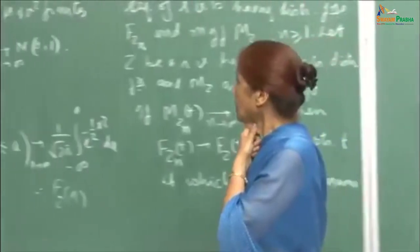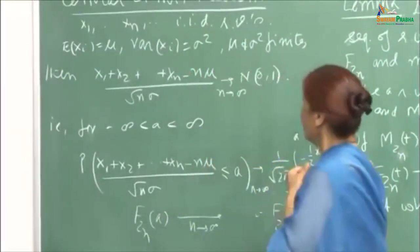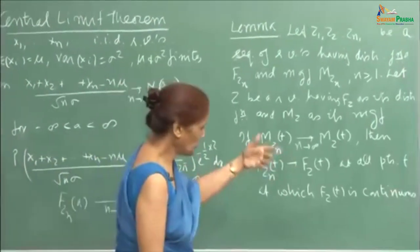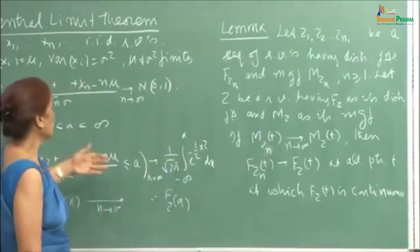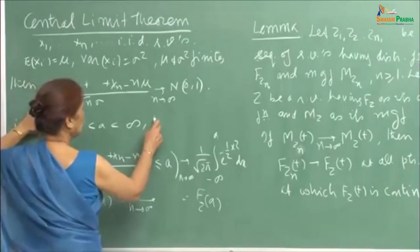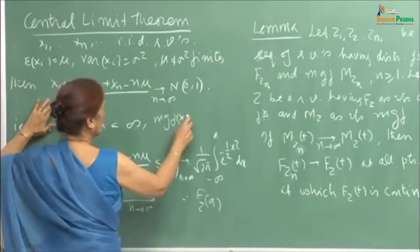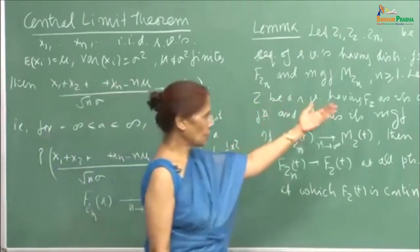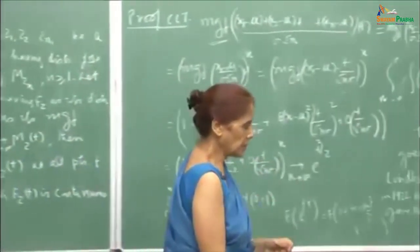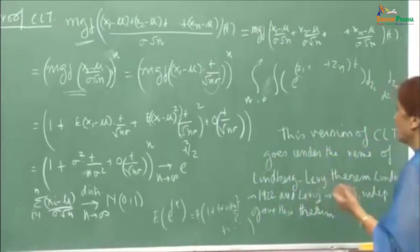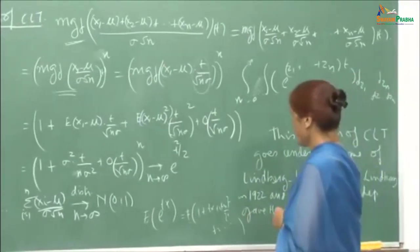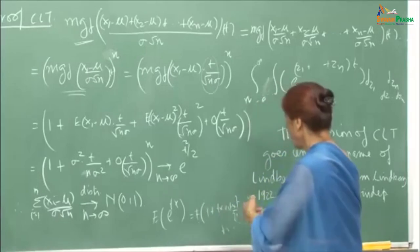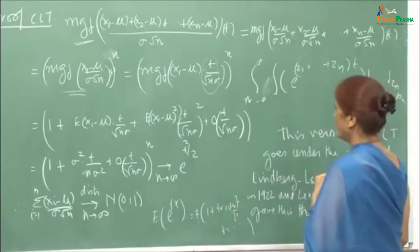In the central limit theorem, we assumed finite variance. An additional assumption is that the MGF of xᵢ exists, so we will consider those t's at which the MGF is defined. Since the MGF exists, the series is convergent, so we can take the expectation inside.